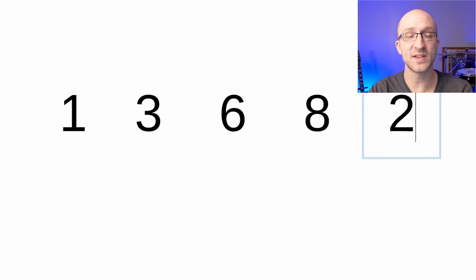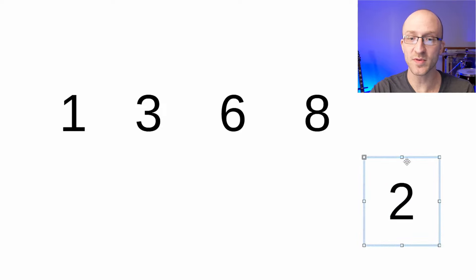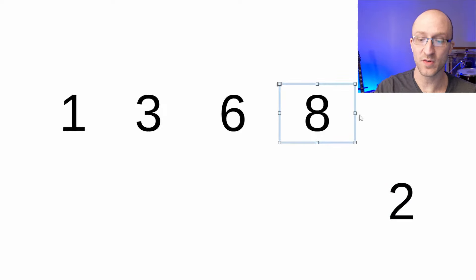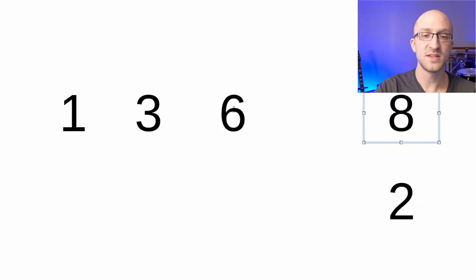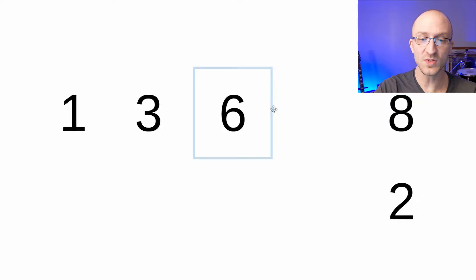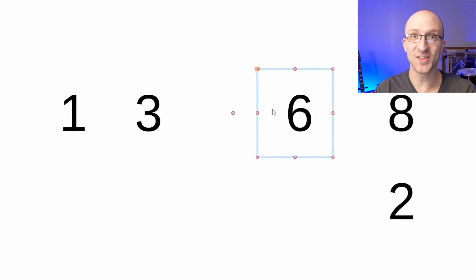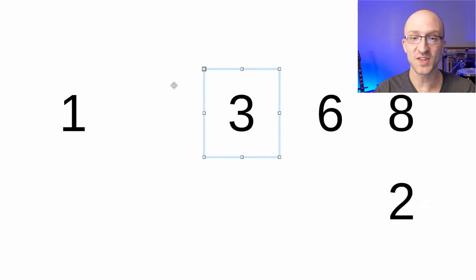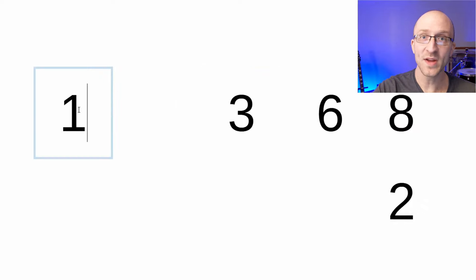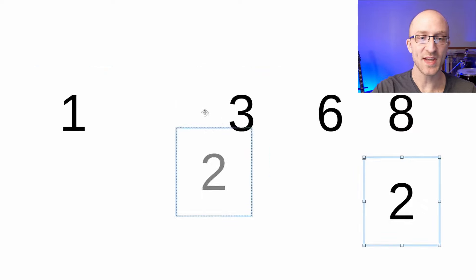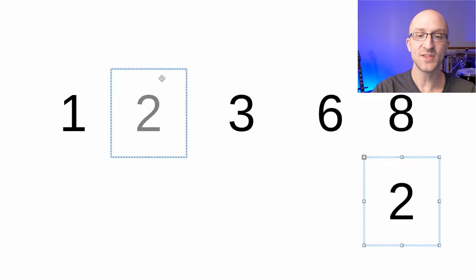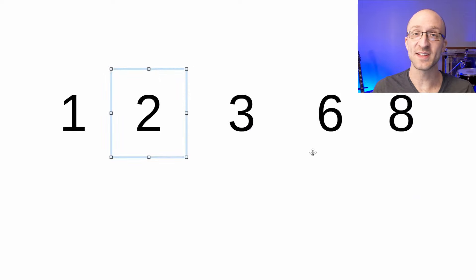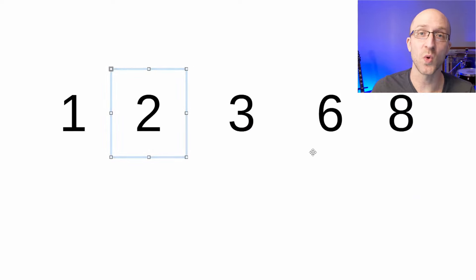The final element in our array is the number two. We copy that two out to a temporary variable. Eight is greater than two, so we shift it right. Six is also greater than two, so we shift it to the right. Three is also greater than two, so we shift it to the right. One is not greater than two, so we stop there, insert two, and since that was the final element, now we know that we have a perfectly sorted array.